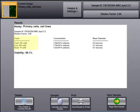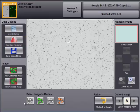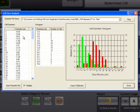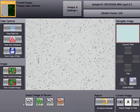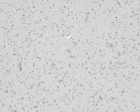In just 30 seconds, the cell count, concentration, mean diameter, and percent viability are displayed on the screen. A cell size histogram can also be viewed.